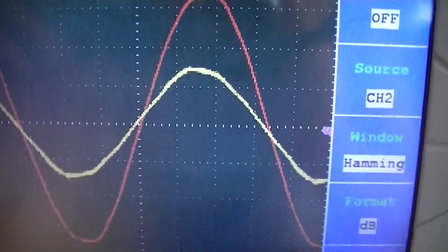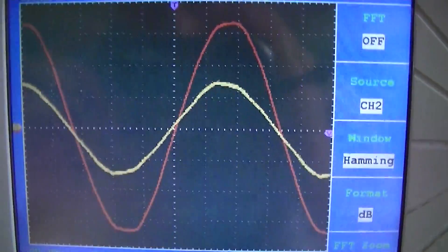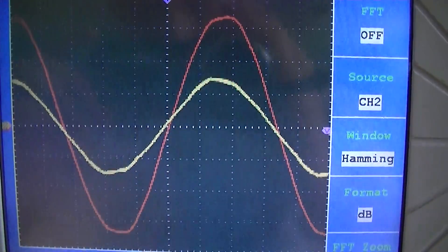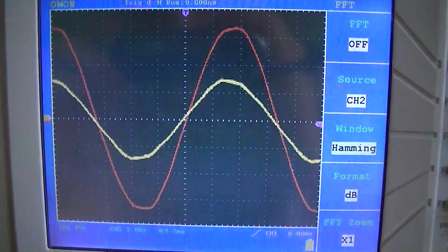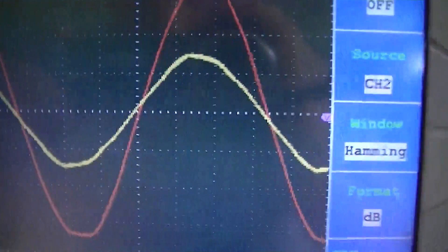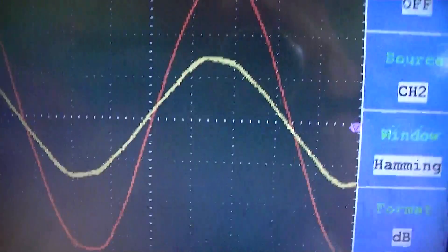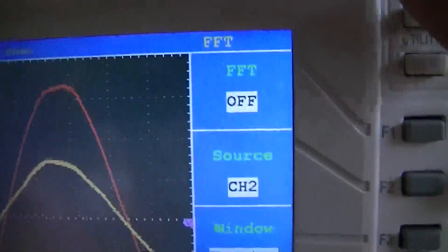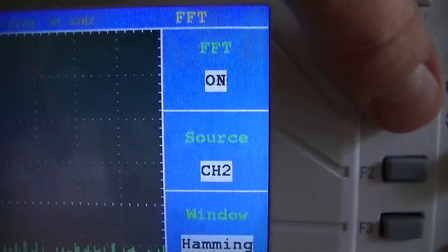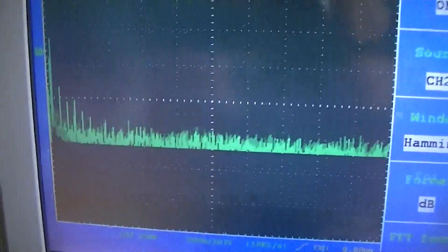Now this is what the current looks like on the oscilloscope. The voltage waveform is the red, and the yellow waveform is the current. We're going to put a function on known as the FFT and have a little look at what's going on here.